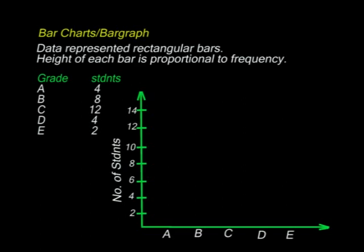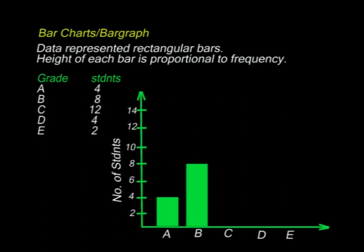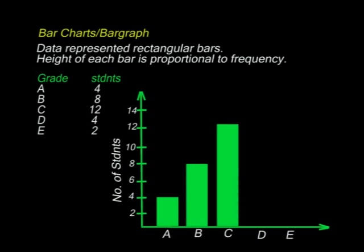For grade A, there were four students — I draw the bar for A up to four. For B, eight students — the bar goes up to eight. For C, twelve students — I draw that bar. For D, four students, just like A. For E, there were two students. You must always give your graph a title, label the axes, and state the scale.